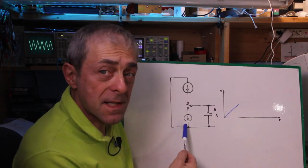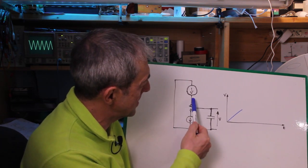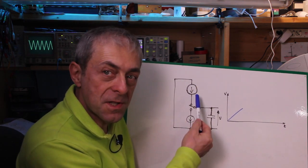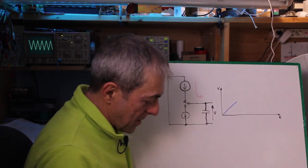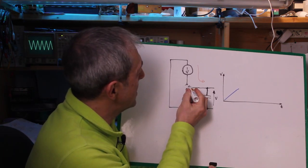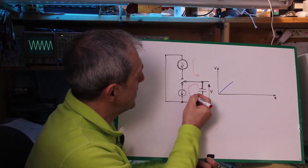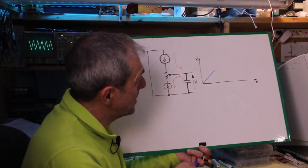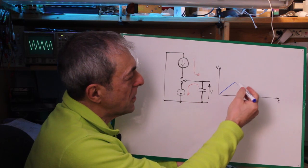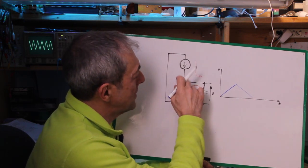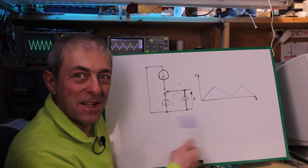If we expand the concept a little bit, we add a current sink and a switch, so that the switch is at first connected to the current source. The current will flow toward the capacitor, charging it. Then we toggle the switch so the current flows from the capacitor through the current sink, and the voltage will go down with a straight slope. Toggling the switch up and down continuously, we generate a triangular waveform.